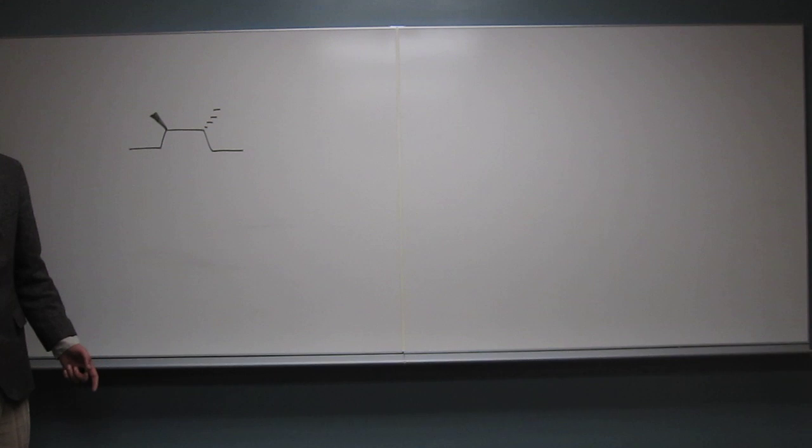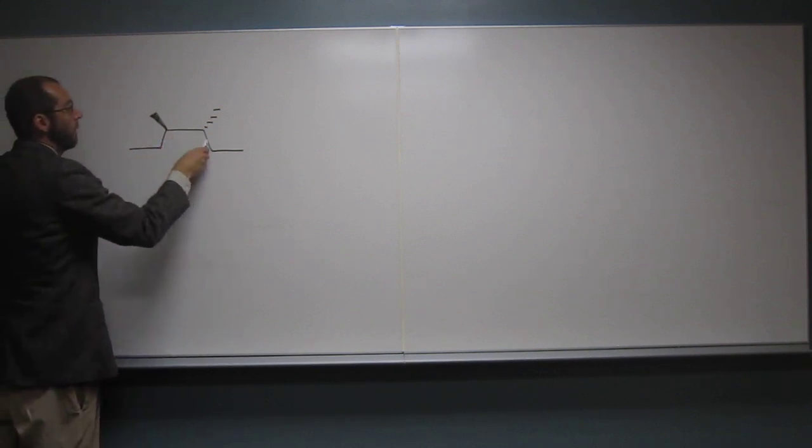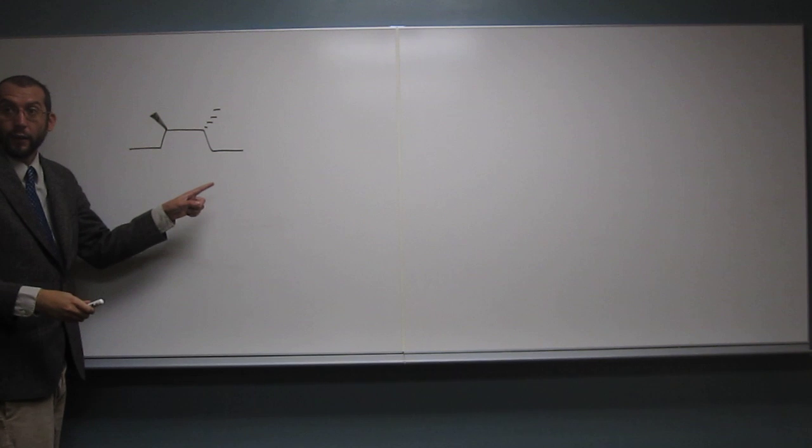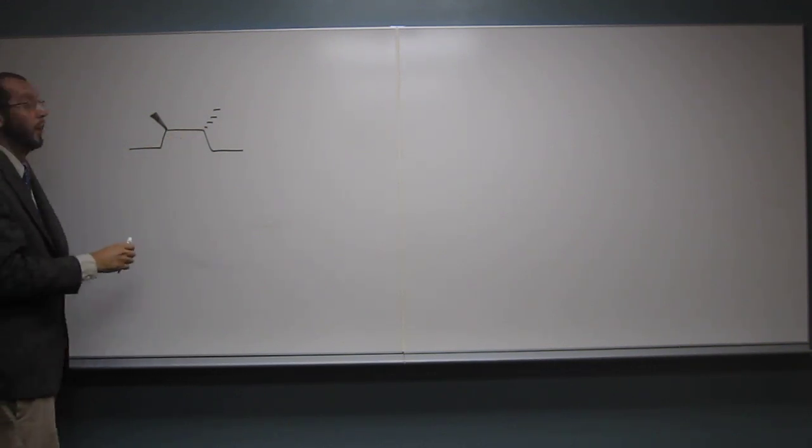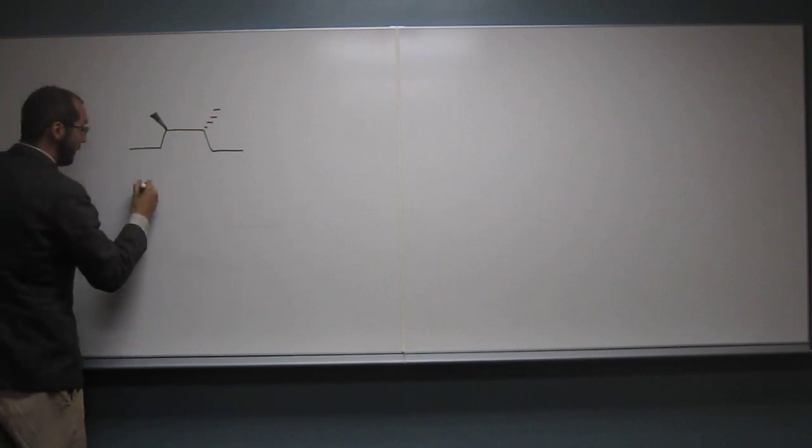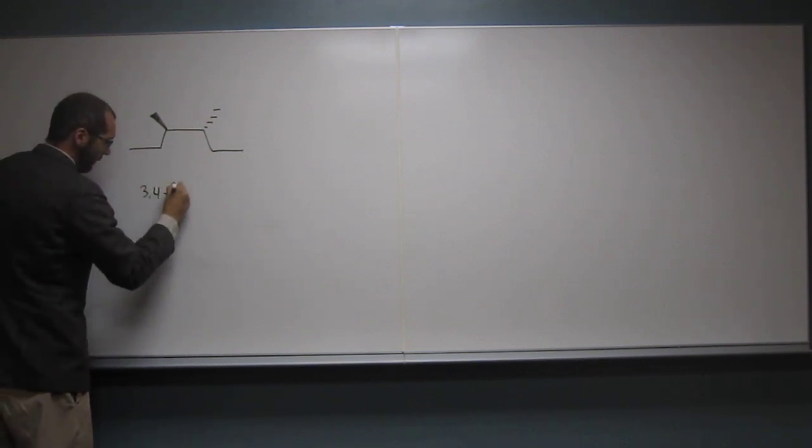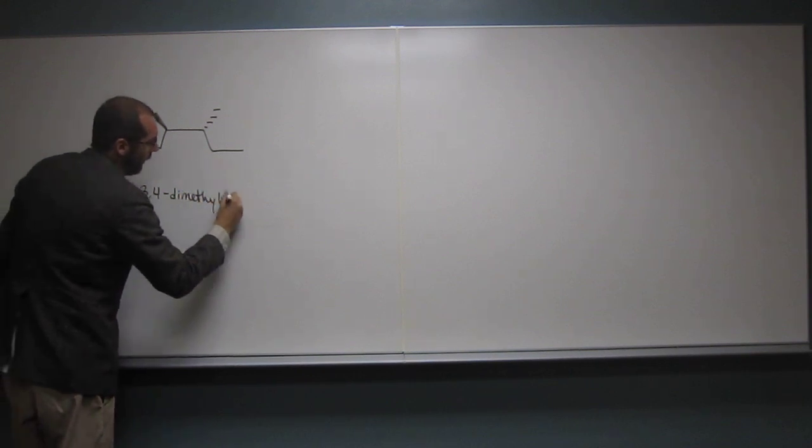This one's coming forward and this one's going back. So if we wanted to name this, we would name this 1, 2, 3, 4, 5, 6, a hexane, right? And it's got two methyl groups and they're on the three and four carbon, right? So we'd name this 3,4-dimethylhexane.